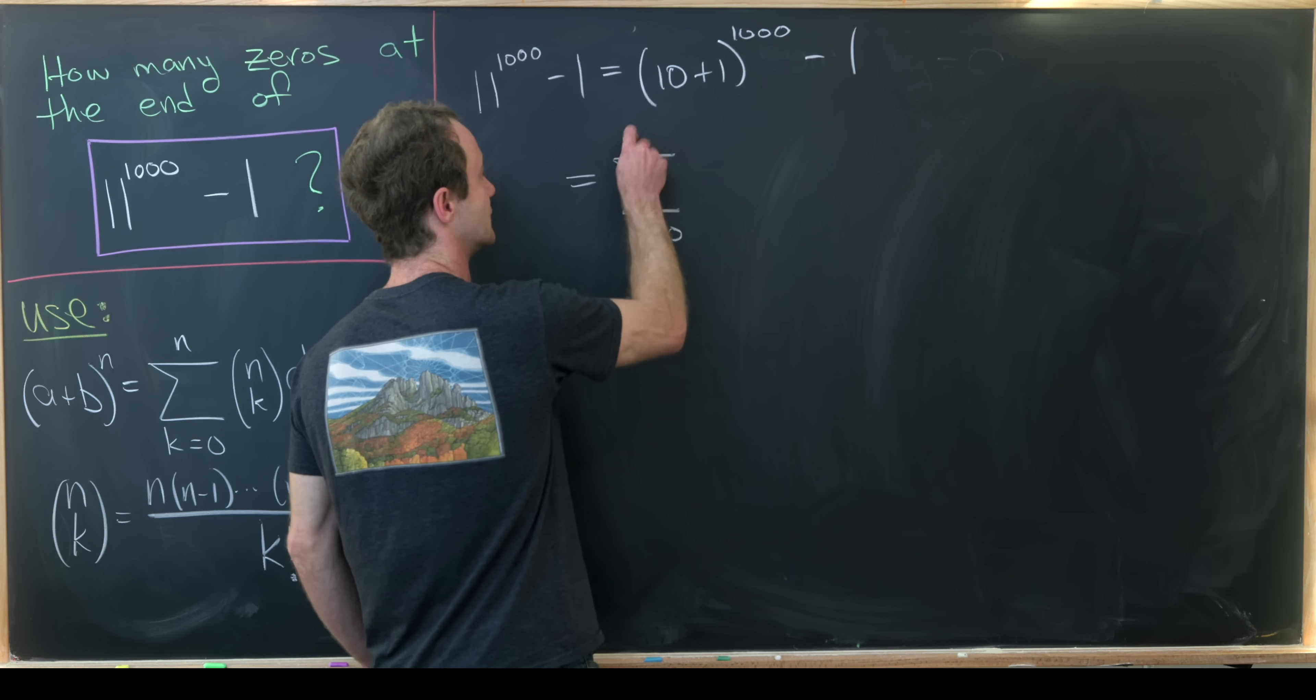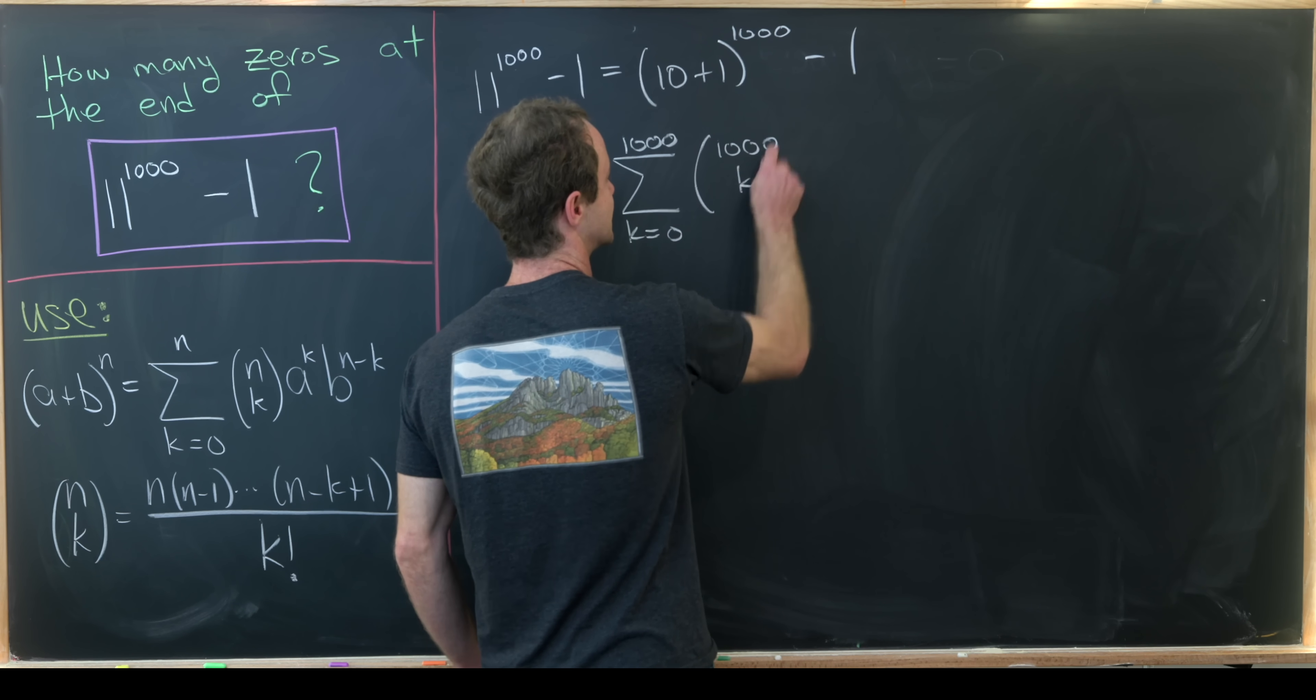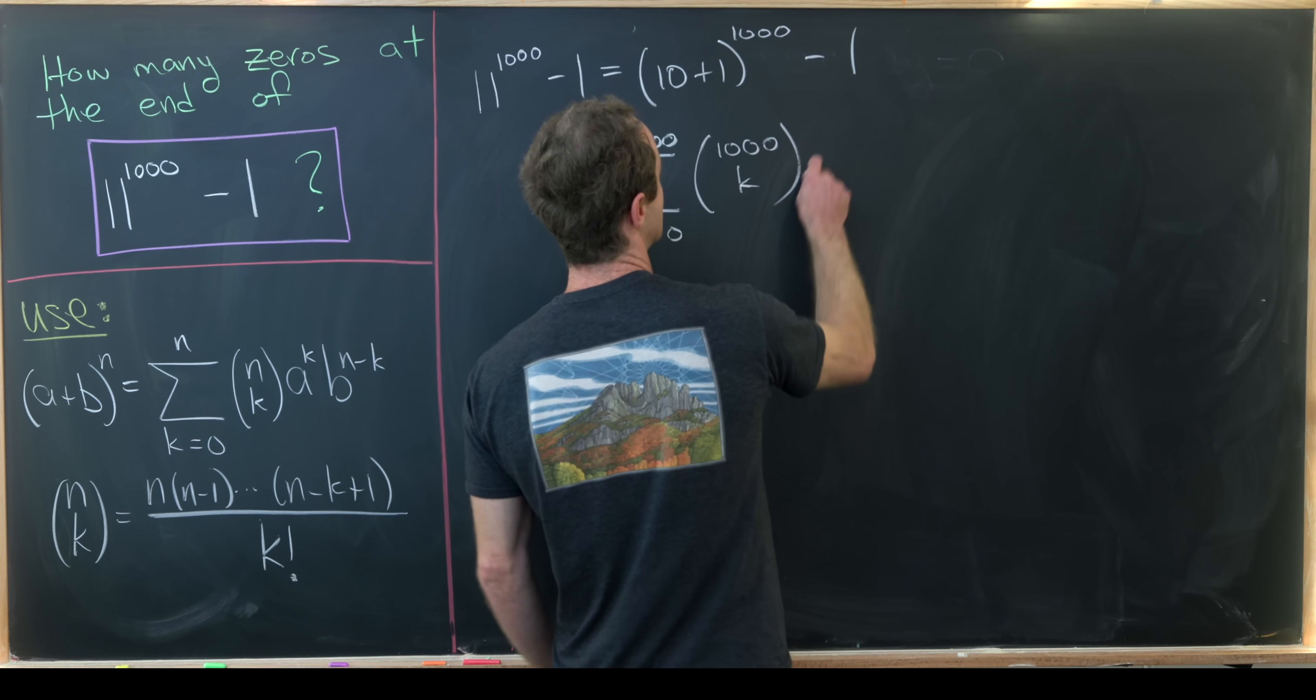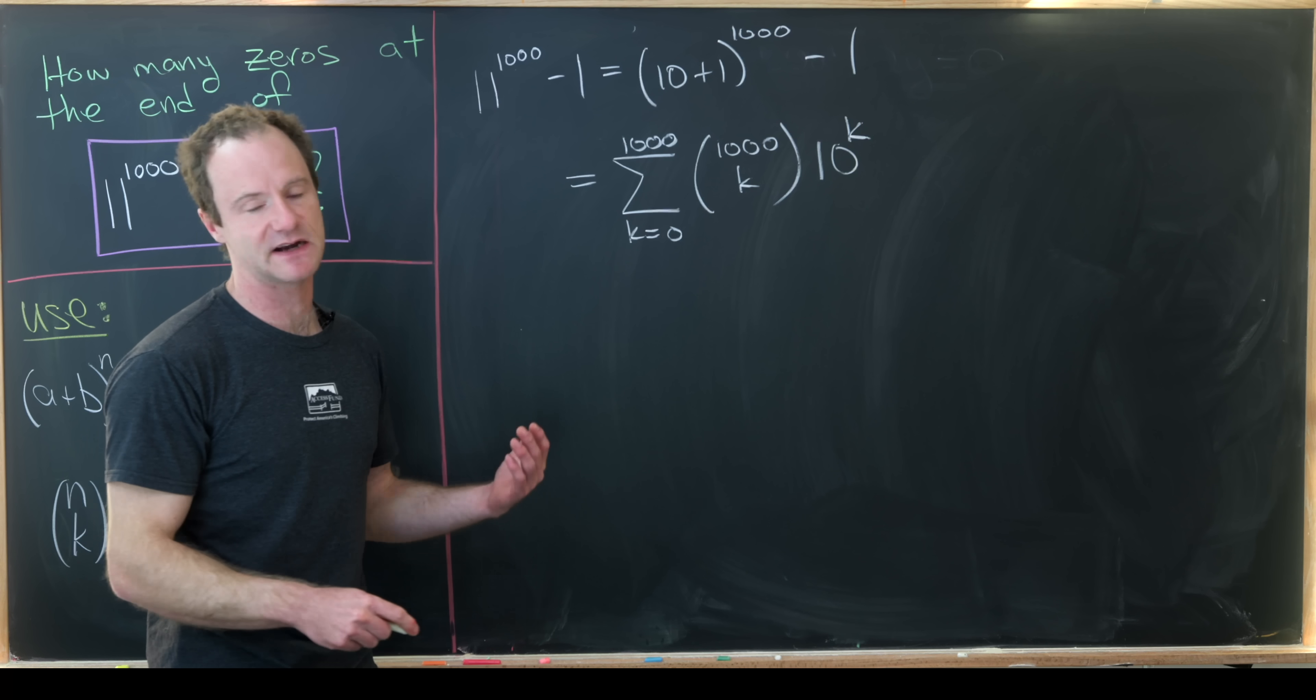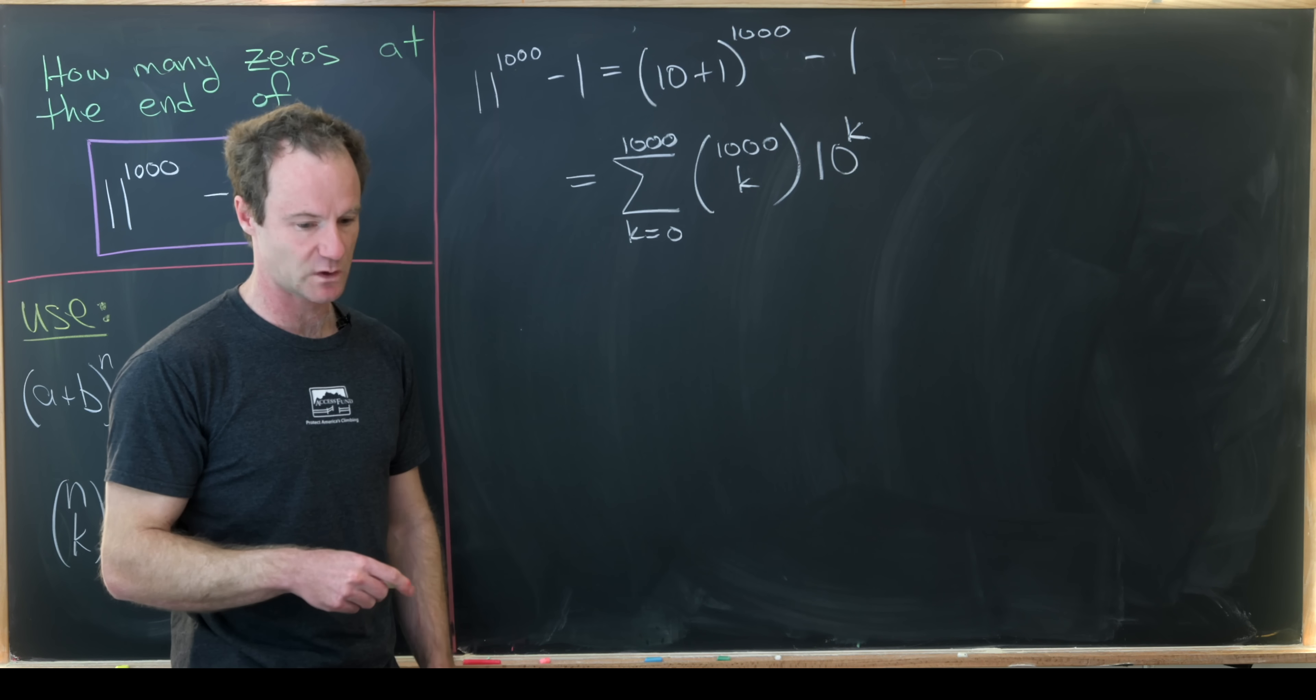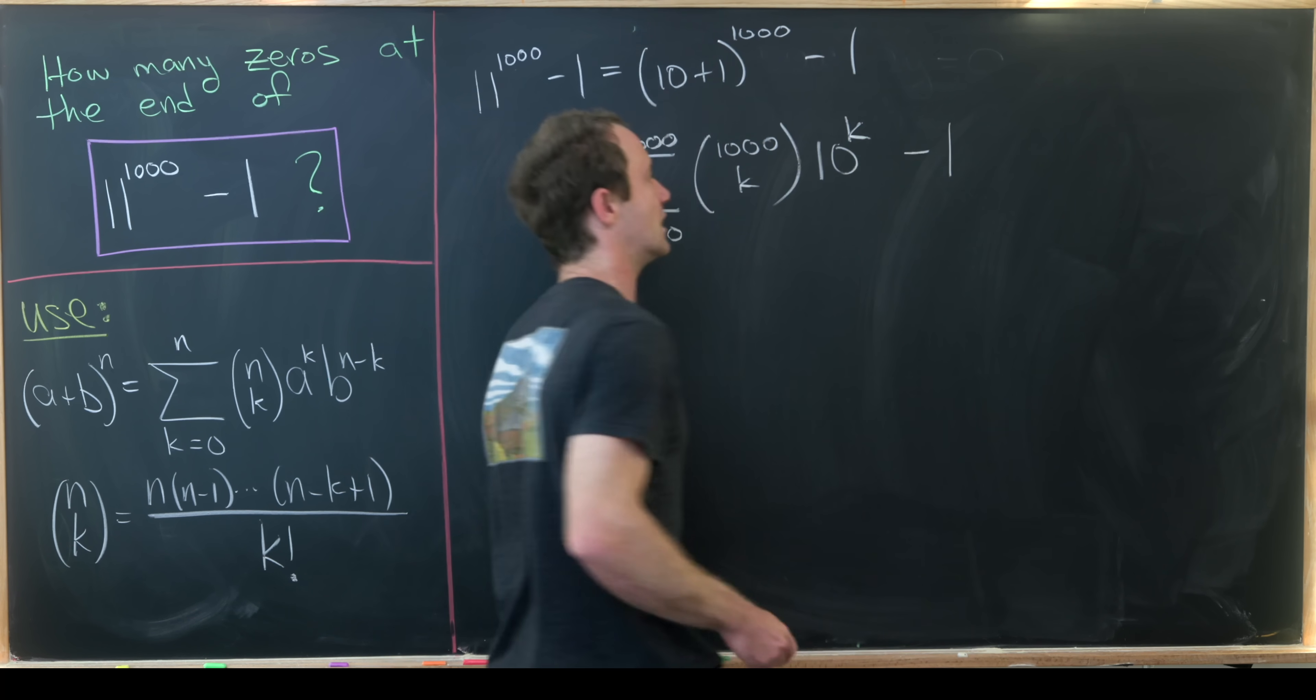So that's going to give us the sum as k goes from 0 up to 1,000 of 1,000 choose k and then 10 to the k times 1 to the thousand minus k. But 1 to any power is just 1 so we don't need to worry about that. And then we're going to subtract 1 from this.